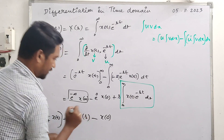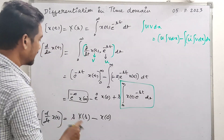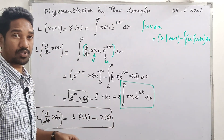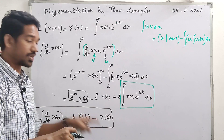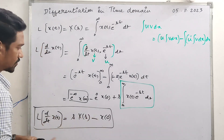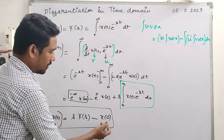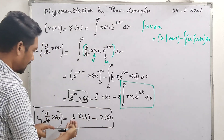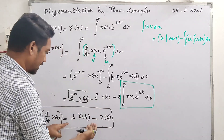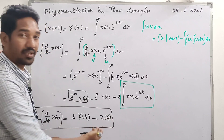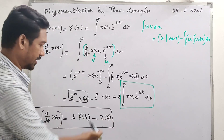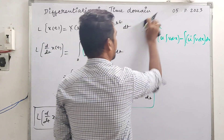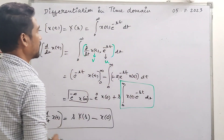So the Laplace transform of D/dt of x(t) — the resultant — is s times x(s) minus x(0). Differentiation property can be directly used to solve example problems. Given x(t), using the differentiation property you can plug values into this formula. Here x(0) is known as the initial value. The initial value is the value at t equals 0.